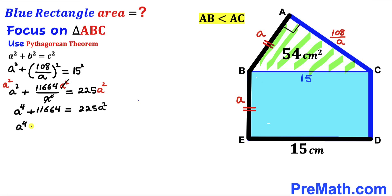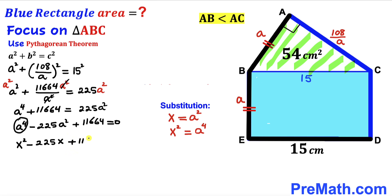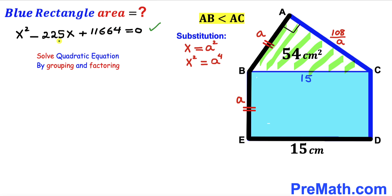Rearranging, we get a⁴ − 225a² + 11,664 = 0. We observe that a⁴ can be written as (a²)², so we make a substitution: let x = a², which means x² = a⁴. Substituting gives us the quadratic equation x² − 225x + 11,664 = 0.